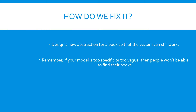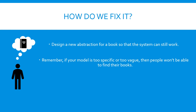Why? Well, when someone is looking for a book, they don't know the number of pages or the colour of the book — they know the title and the author. So if your abstraction is too specific, people won't be able to find their books. The same applies if it's too vague, because then there will be too many books matching the same description.